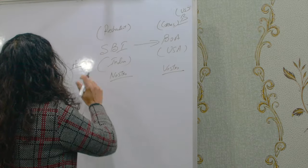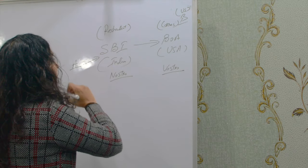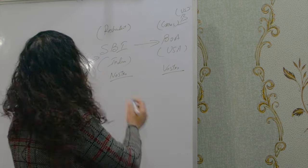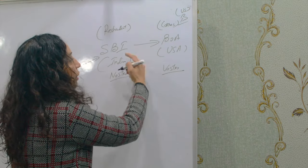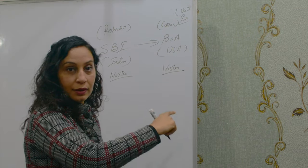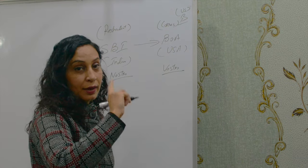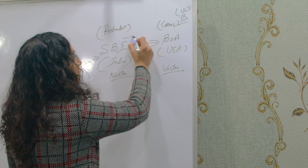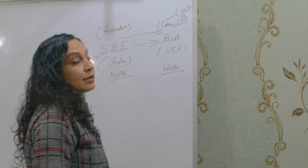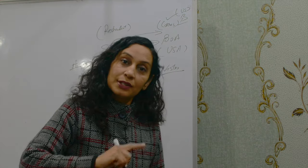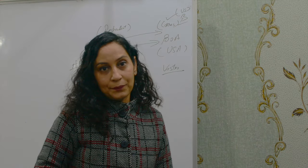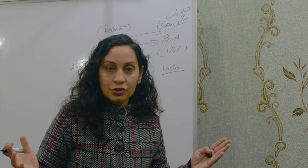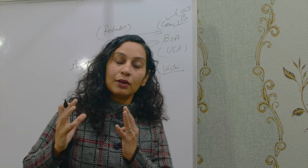When Mr. A wants a transaction to happen in the USA, SBI (the respondent bank) uses its account with Bank of America (the correspondent bank). The transaction is processed in the USA and Mr. B gets paid in US dollars. This is how two banks support each other through what is called correspondent banking.